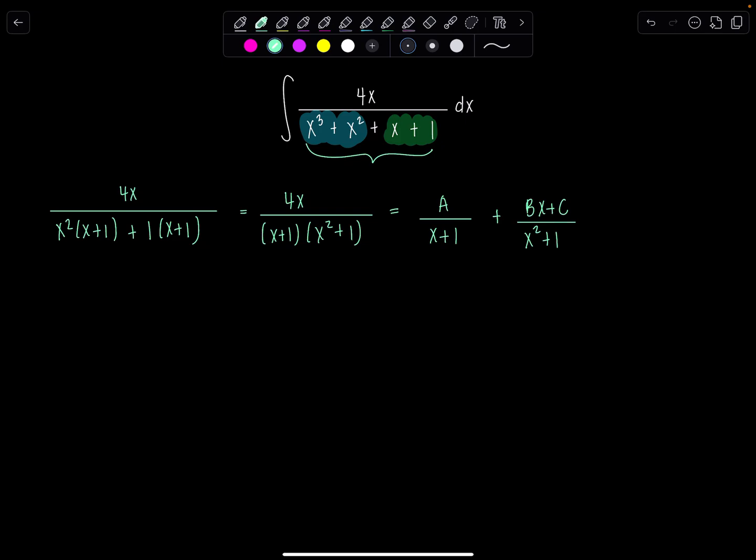Good? Okay, now let's solve for a, b, and c. So I'm going to go through and multiply by x plus one, x squared plus one, and then we'll set up a nice system of equations. So we have 4x equals a times x squared plus one plus bx plus c times x plus one.